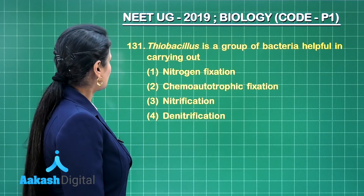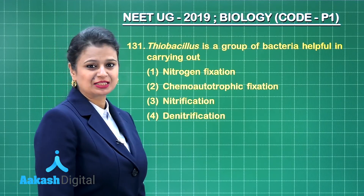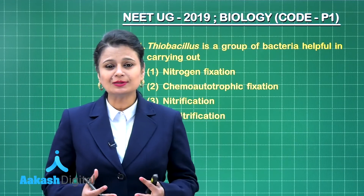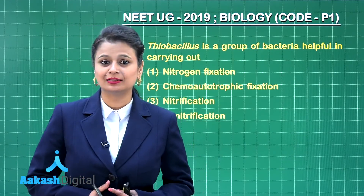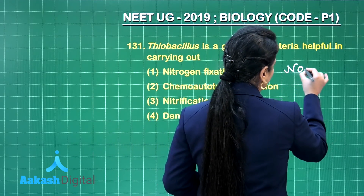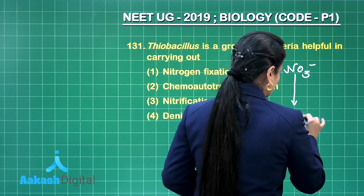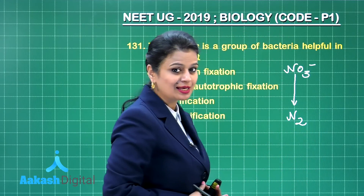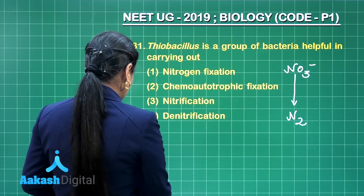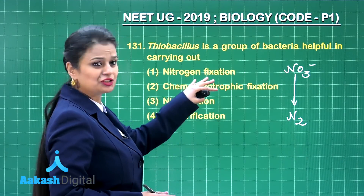Let's see question 131. Thiobacillus is a group of bacteria helpful in carrying out — Thiobacillus is involved in the nitrogen cycle and in the conversion of nitrate ultimately into molecular nitrogen. This process is known as denitrification.